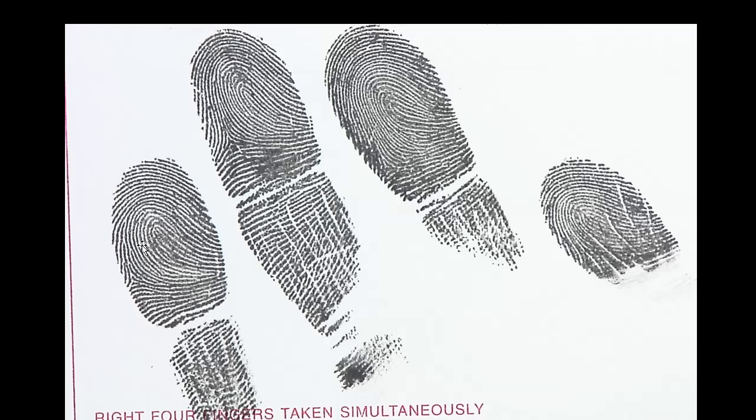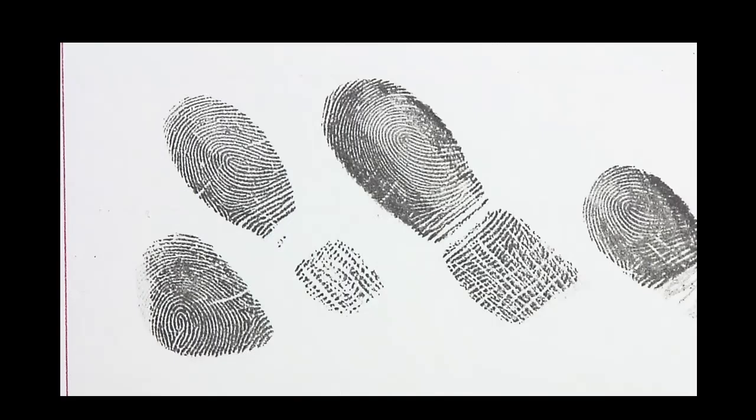Hopefully you immediately see that these are all ulnar loops from the right hand. Here's another set — what do you recognize? All of these are slanting in the same angle, and this one is going in the opposite direction. So that would be your radial loop in the right index finger.